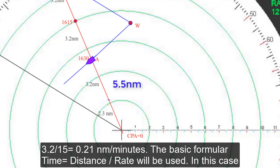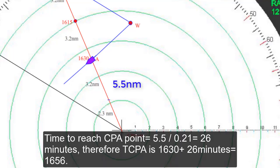In this case, time to reach CPA point is 26 minutes. Therefore, TCPA is 16:30 plus 26 minutes, which comes to 16:56.